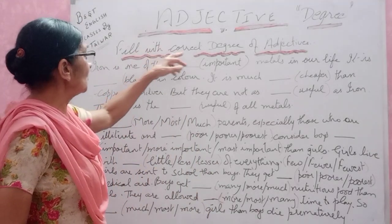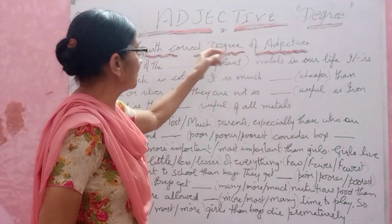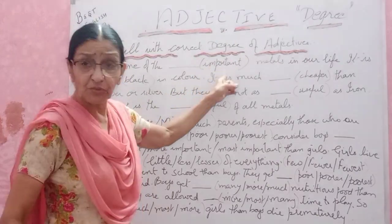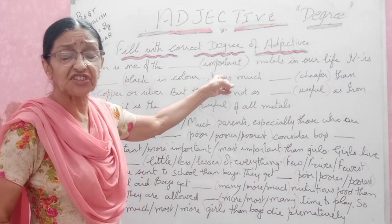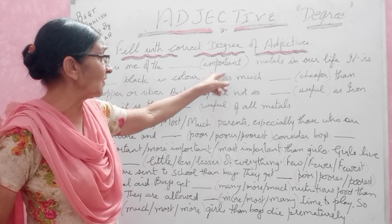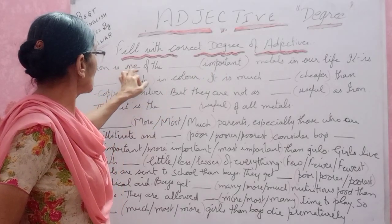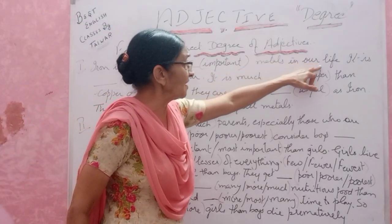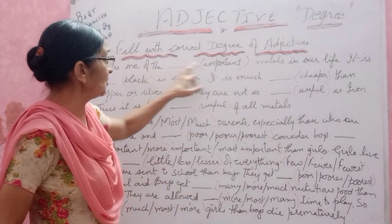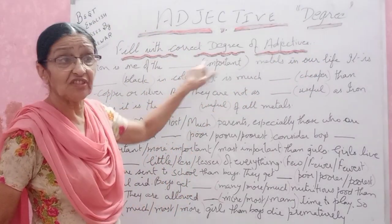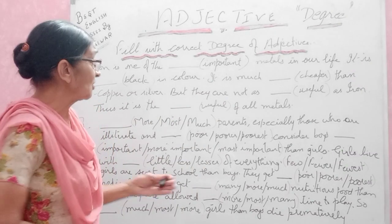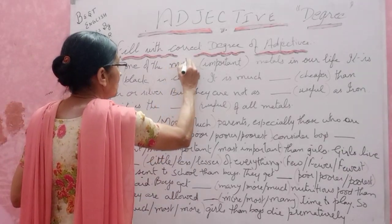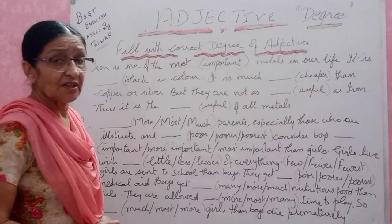First one: fill in the correct degree of adjective. Yesterday we did the same thing; again I have taken the next paragraph. Iron is one of the most important matters in our life. The word 'important' is given — and since 'the' appears before it, we will use 'most': most important matters in our life.